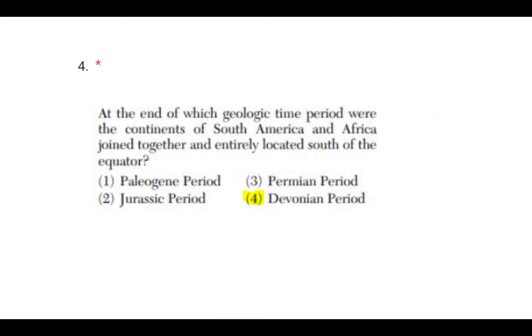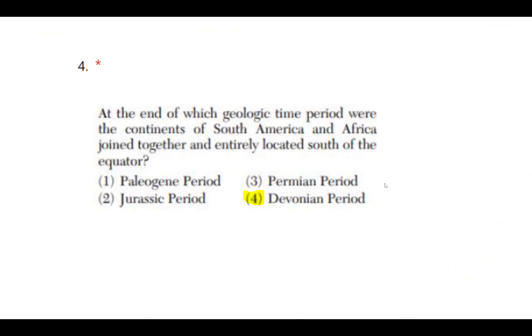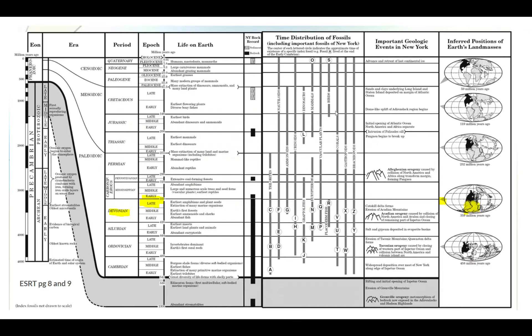Number four: at the end of which geologic time period were the continents of South America and Africa joined together and entirely located south of the equator? The correct answer is four, Devonian period. You go to your reference table pages 8 and 9 and look at them side by side. South America and Africa were joined together and in the southern hemisphere around this time, which looks like the late Devonian period, around when the Devonian period was ending.